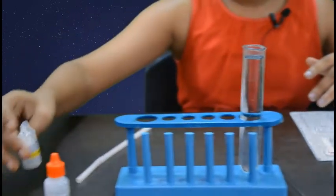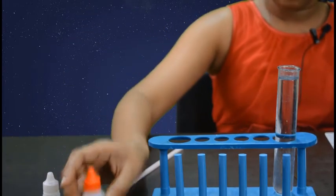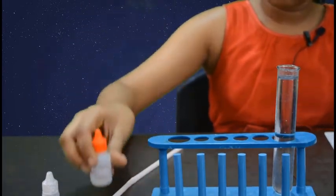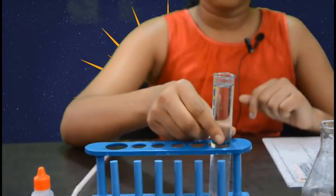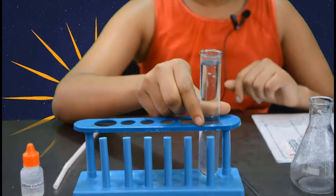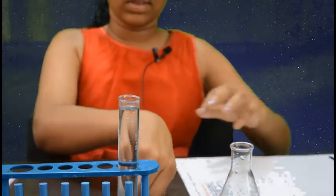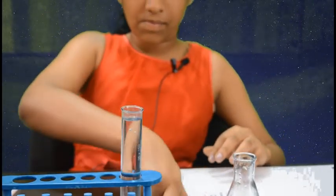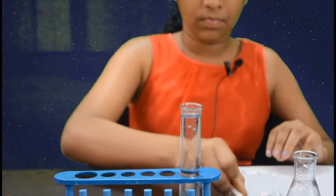The materials are: phenophthalein pH indicator, sodium carbonate which is also known as washing soda, test tube holder and test tube which can hold 50 ml of water, conical flask, stirrer and a blower. Now let's begin with the experiment.